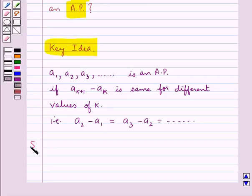Let's proceed with the solution now. Now, we are given the three terms of an AP, 2P minus 1, 7 and 3P.